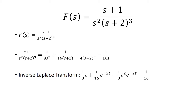Now we just take the inverse Laplace transform of each one of these. So 1 over 8 — think of that as a constant, just factor it out — and the inverse Laplace transform of 1 over s² is just t. The 1 over 16 gets factored out, and then you have 1 over (s+2), which gives e to the negative 2t.